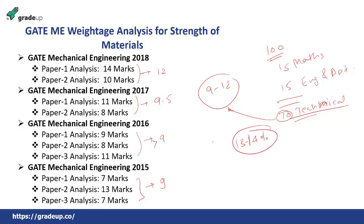So 13 to 14 percent weightage of any subject in a competitive examination with cutthroat competition — where a single mark can make or take away your career — is a very big weightage.